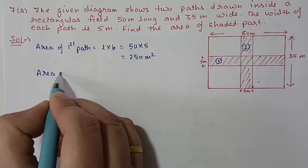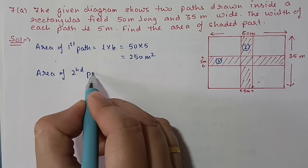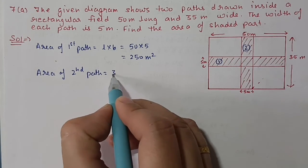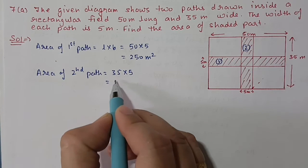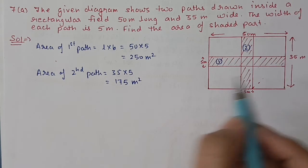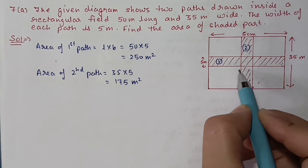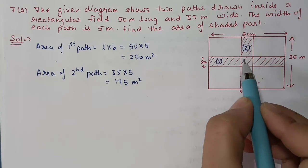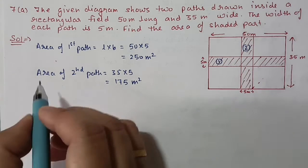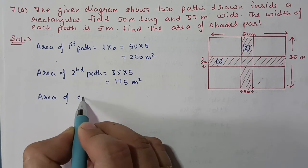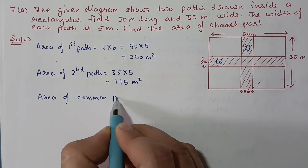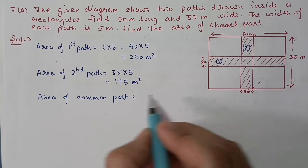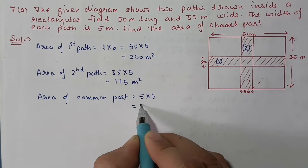Area of the second path equals length times breadth: 35 times 5 equals 175 square meters. But you can see one part is common to both areas, so we have calculated it twice — once with the first path and once with the second path. So we have to subtract the common area once. The common part is 5 times 5, which equals 25 square meters.